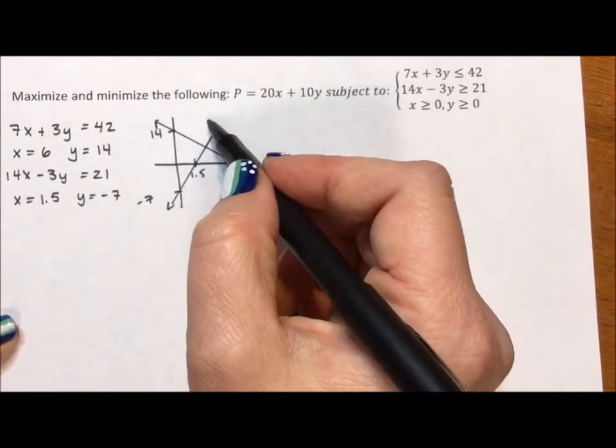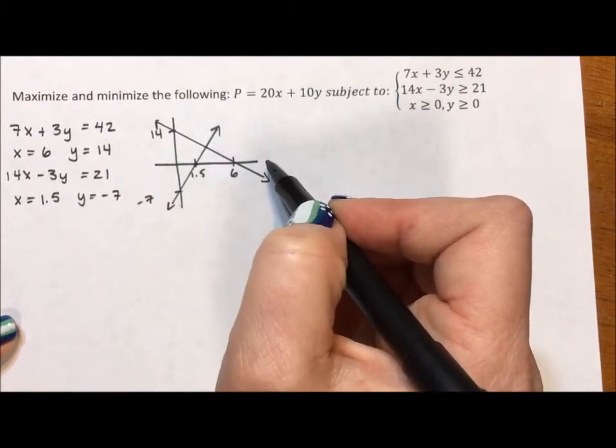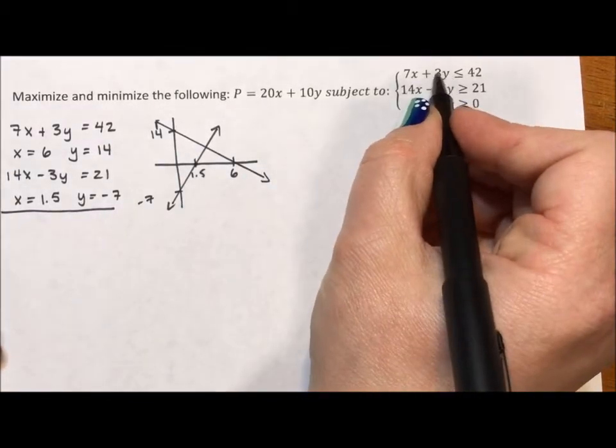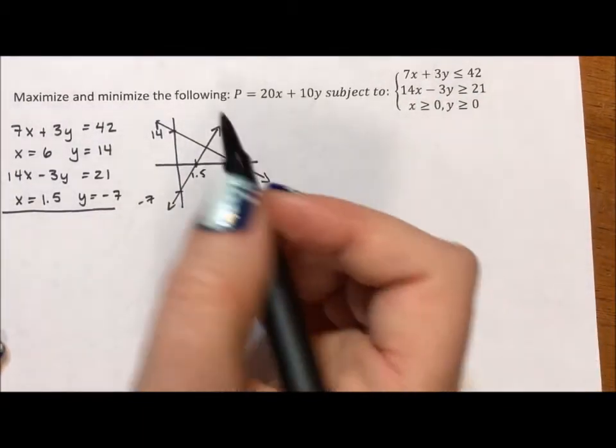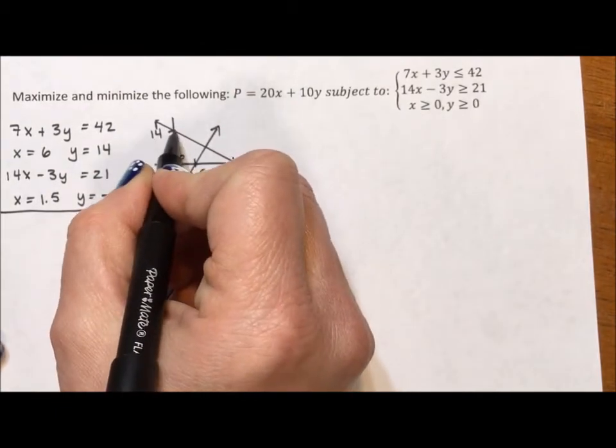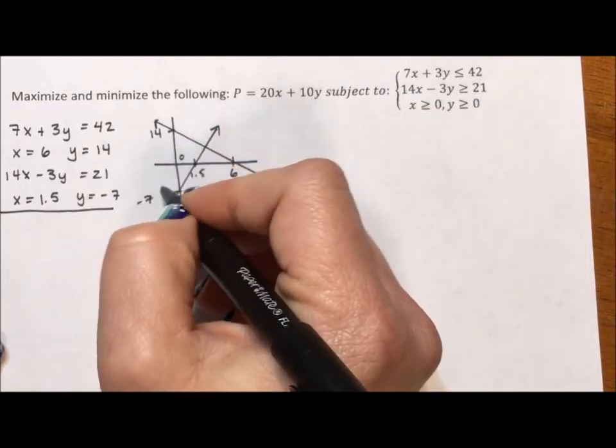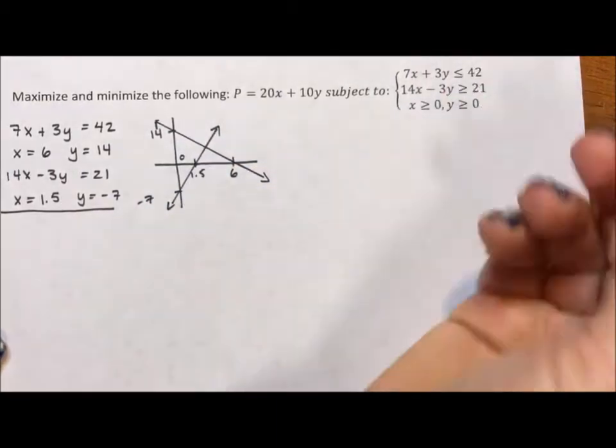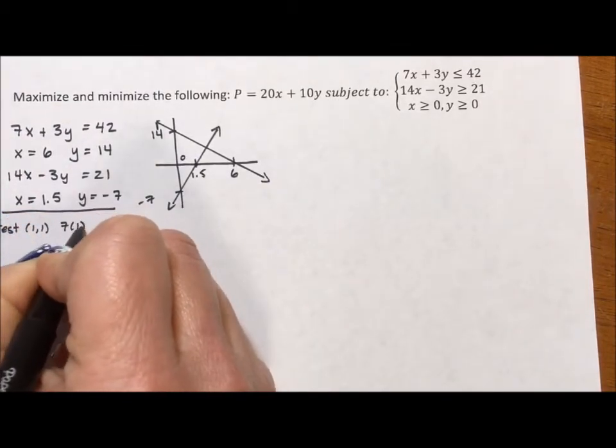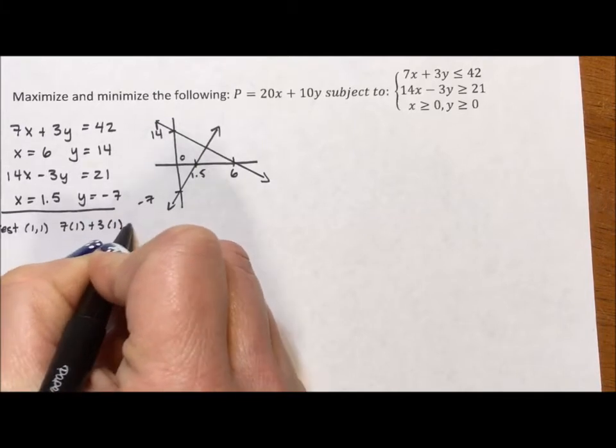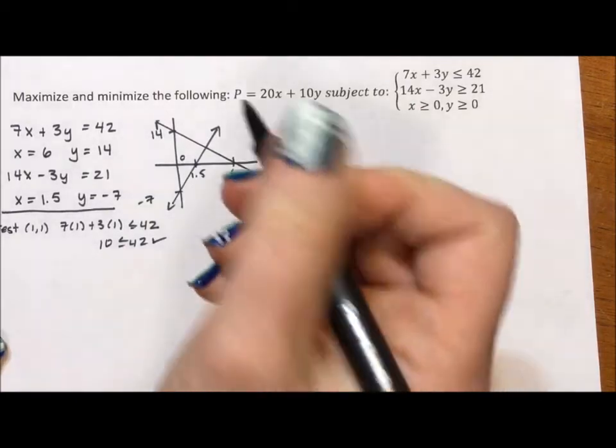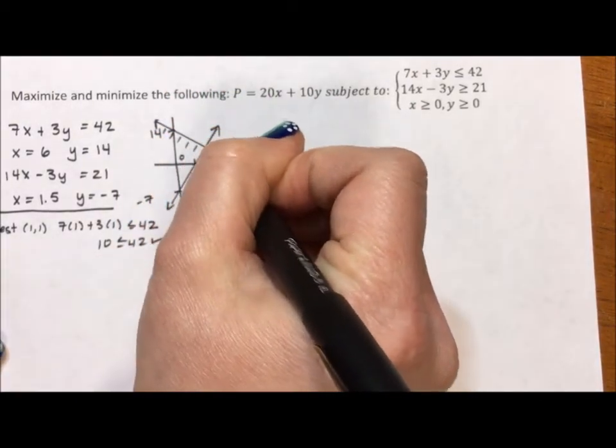I need to figure out which of these four sections of the graph I want to shade. So I'm going to start by looking at this first line, and what I'm going to do is test a point. So I'm going to test the point (1, 1). And if this point satisfies this inequality, then all the points over here will satisfy this inequality. So is 7 times 1 plus 3 times 1 less than or equal to 42? Is 10 less than or equal to 42? It is, which means we're shading below this line.